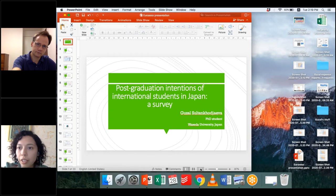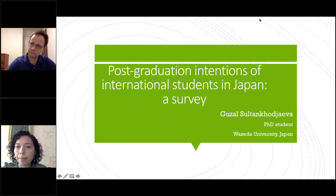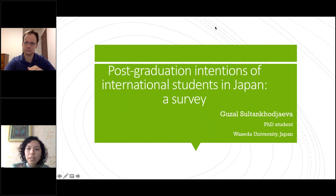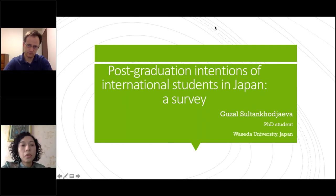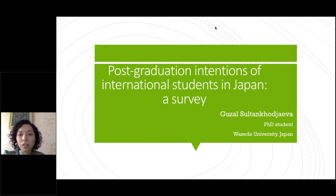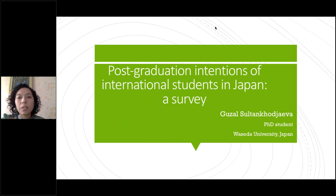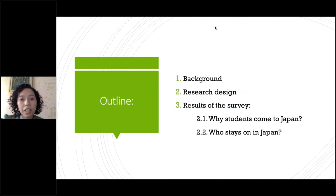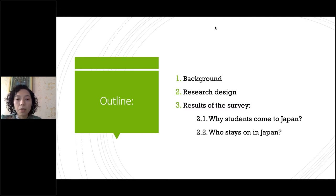All right, thank you so much. So let me tell you about my research. It's an ongoing research and analysis is still going on. Today I'm going to talk about the results we have so far. The main topic is post-graduation intentions of international students in Japan, based on a survey that we conducted. The outline of today's presentation: I will first talk about the background of the topic, then research design, and then the results of the survey — first why students come to Japan to study, and then who stays on in Japan among those students.